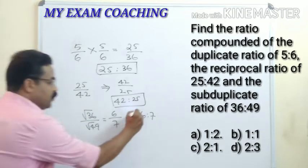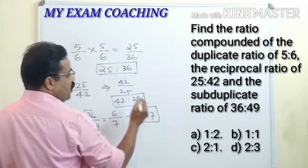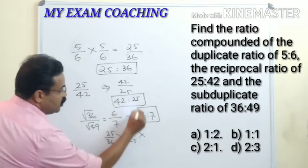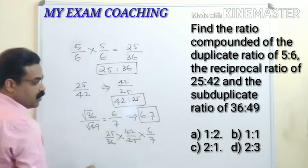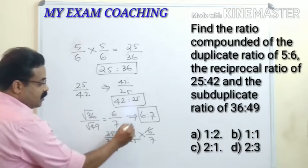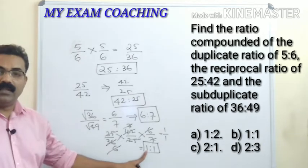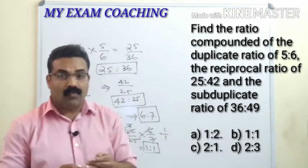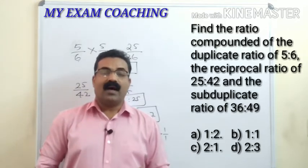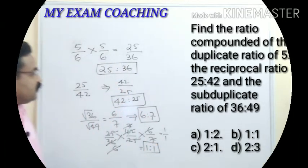The compounded ratio means you multiply all three together: 25/36 × 42/25 × 6/7. Cancelling 25 with 25, 6 into 36 six times, 6 into 42 seven times, and 7 with 7 — everything becomes 1 by 1. So the correct answer is 1 is to 1. Understand what is duplicate ratio, reciprocal ratio, sub-duplicate ratio, and that compounded ratio is the product of all these.